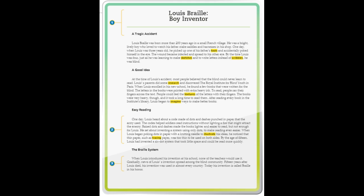Louis Braille was born more than 200 years ago in a small French village. He was a bright, lively boy who loved to watch his father make saddles and harnesses in his shop. One day, when Louis was three years old, he picked up one of his father's tools and accidentally poked himself in the eye.